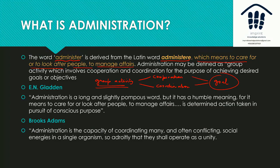Now we'll look at various thinkers and their definitions. The first thinker is E.N. Gladden. He says administration is a long, slightly pompous word with a humble meaning — it means to care for or to look after people, to manage affairs. It is determined action taken in pursuit of a conscious purpose.